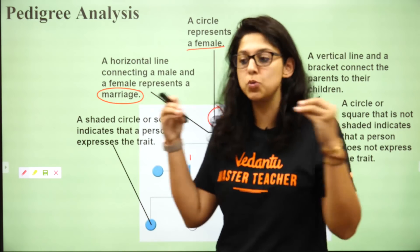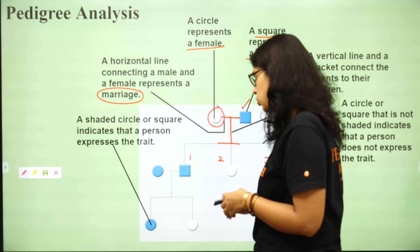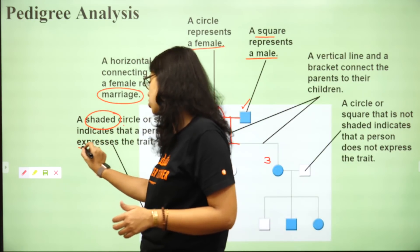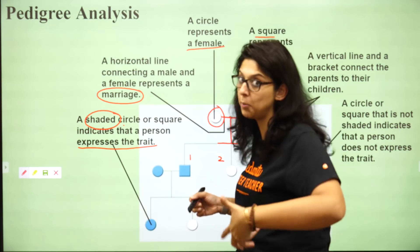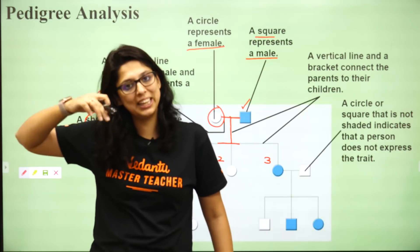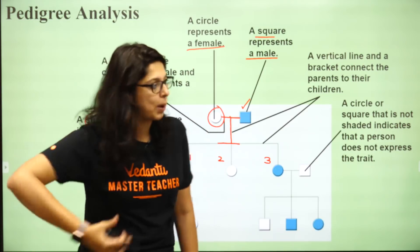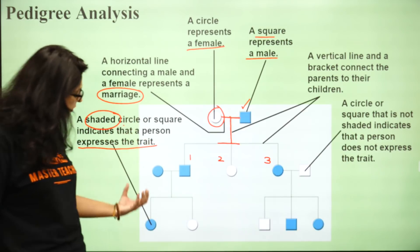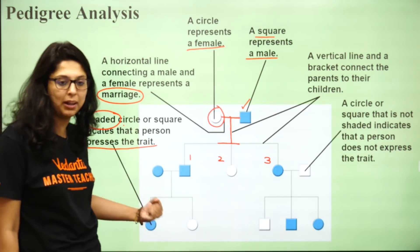Jo bhi mere paas shaded area hai, that means the person is expressing the trait jis bhi cheez ki mein baat kar rahi. If I'm talking about a disease because pedigree analysis is basically a family chart jaha mein dekhti hoon ki kaise yeh disease family mein pass hui hai. So that usually signifies that this generation mein woh disease ya woh gene of interest jiske bhi mein baat kar rahi hoon woh hai.